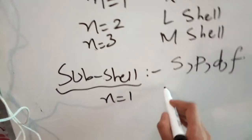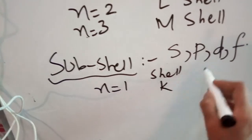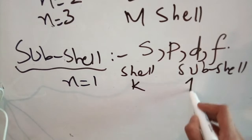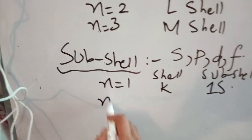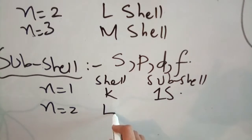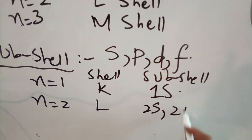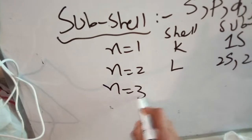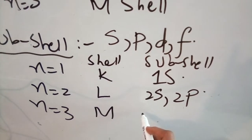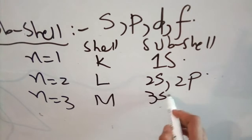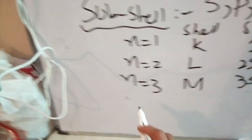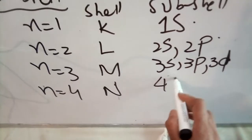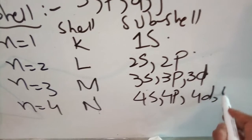For example, if n is equal to 1, then the shell is K-shell, but the sub-shell in it will be 1S. Similarly, when n is equal to 4, the shell is N-shell, and the sub-shells inside it are 4S, 4P, 4D, and 4F.